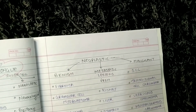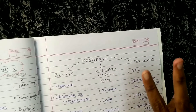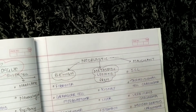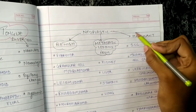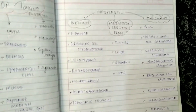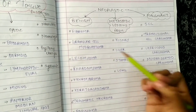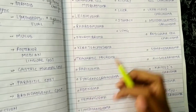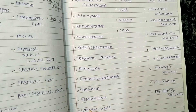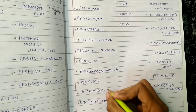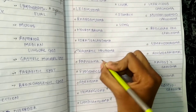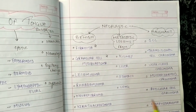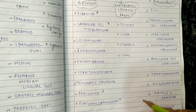Coming to neoplastic — there are two things: benign and malignant. We have divided it into three parts: benign, metastatic lesions, and malignant. In benign we have fibroma, granular cell myoblastoma, leiomyoma, rhabdomyoma, neurofibroma, keratoacanthoma, traumatic neuroma, papilloma, pyogenic granuloma, adenoma, hemangioma, and lymphangioma. Important ones here are hemangioma, lymphangioma, pyogenic granuloma, papilloma, and granular cell myoblastoma.